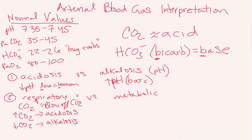Respiratory acidosis is when you're not blowing off your CO2 — something like COPD, pneumonia, or respiratory depression where you're not having good gas exchange. The CO2 in your blood can't get out and be exhaled, so it builds up and causes acidosis.